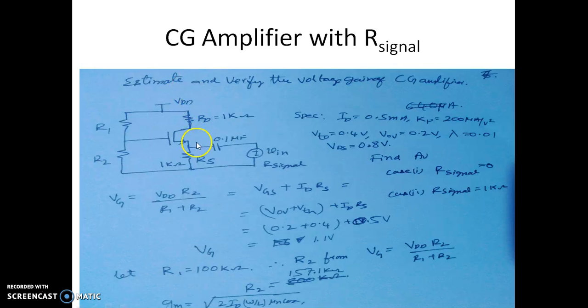It for a CG amplifier the input is applied at the source with the use of this coupling capacitor and RS is provided to have a path for the drain current to flow through this.